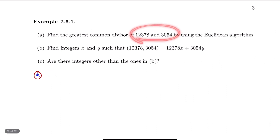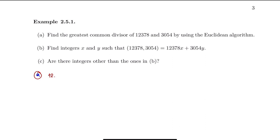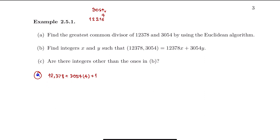To find the greatest common divisor we need to divide one number by the other. So we divide 12,378 by 3,054. The quotient turns out to be 4 because 3,054 times 4 gives us 12,216. The remainder is 162.